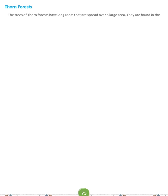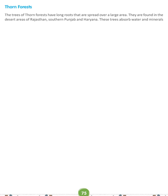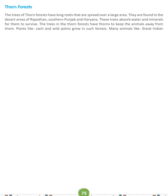Thorn Forests: The trees of Thorn Forests have long roots that are spread over a large area. They are found in the desert areas of Rajasthan, Southern Punjab, and Haryana. These trees absorb water and minerals to survive. The trees in Thorn Forests have thorns to keep animals away. Plants like cacti and wild palms grow in such forests. Many animals like the Great Indian Bustard, Indian Gazelle, and Desert Cat are found in these forests.